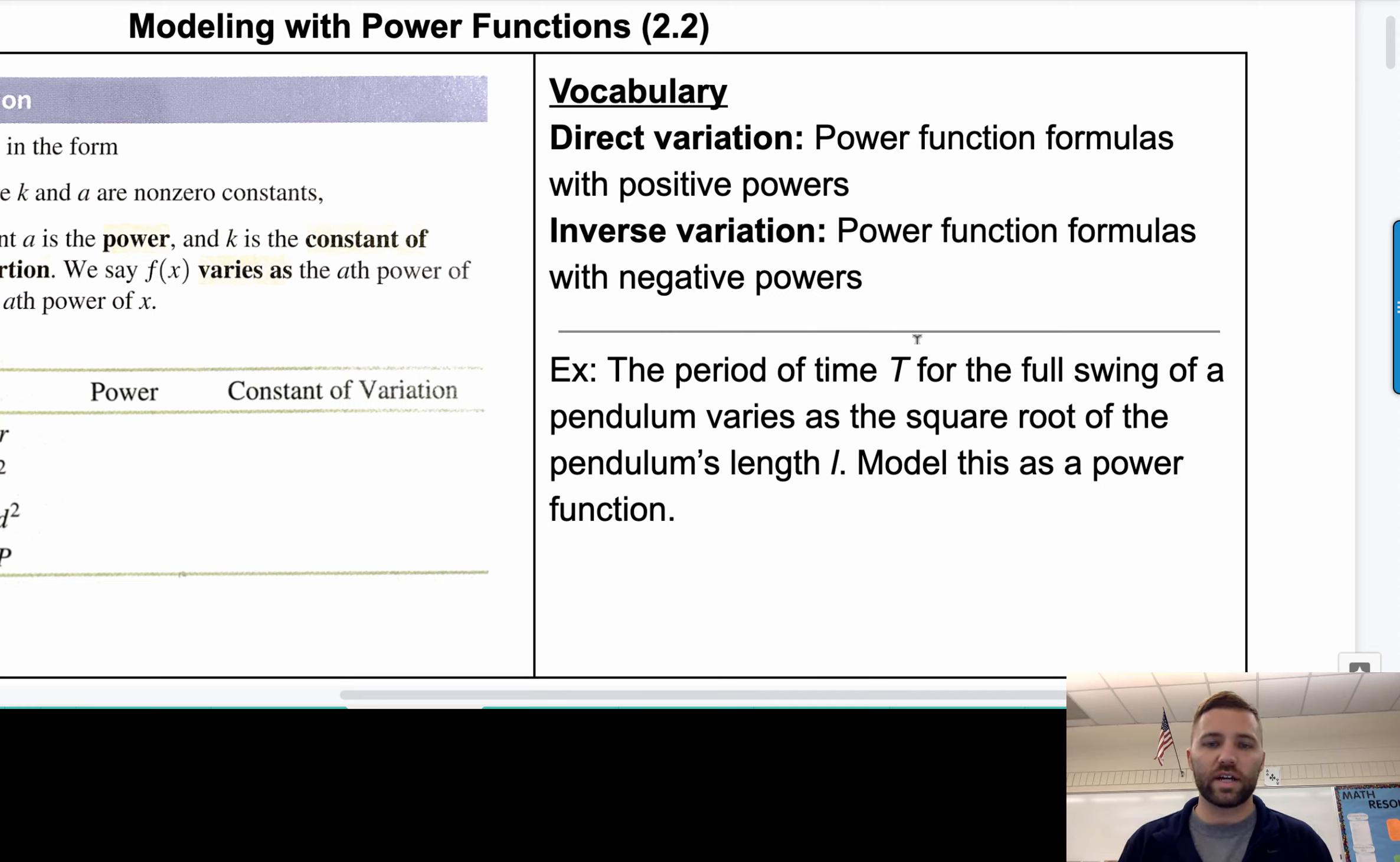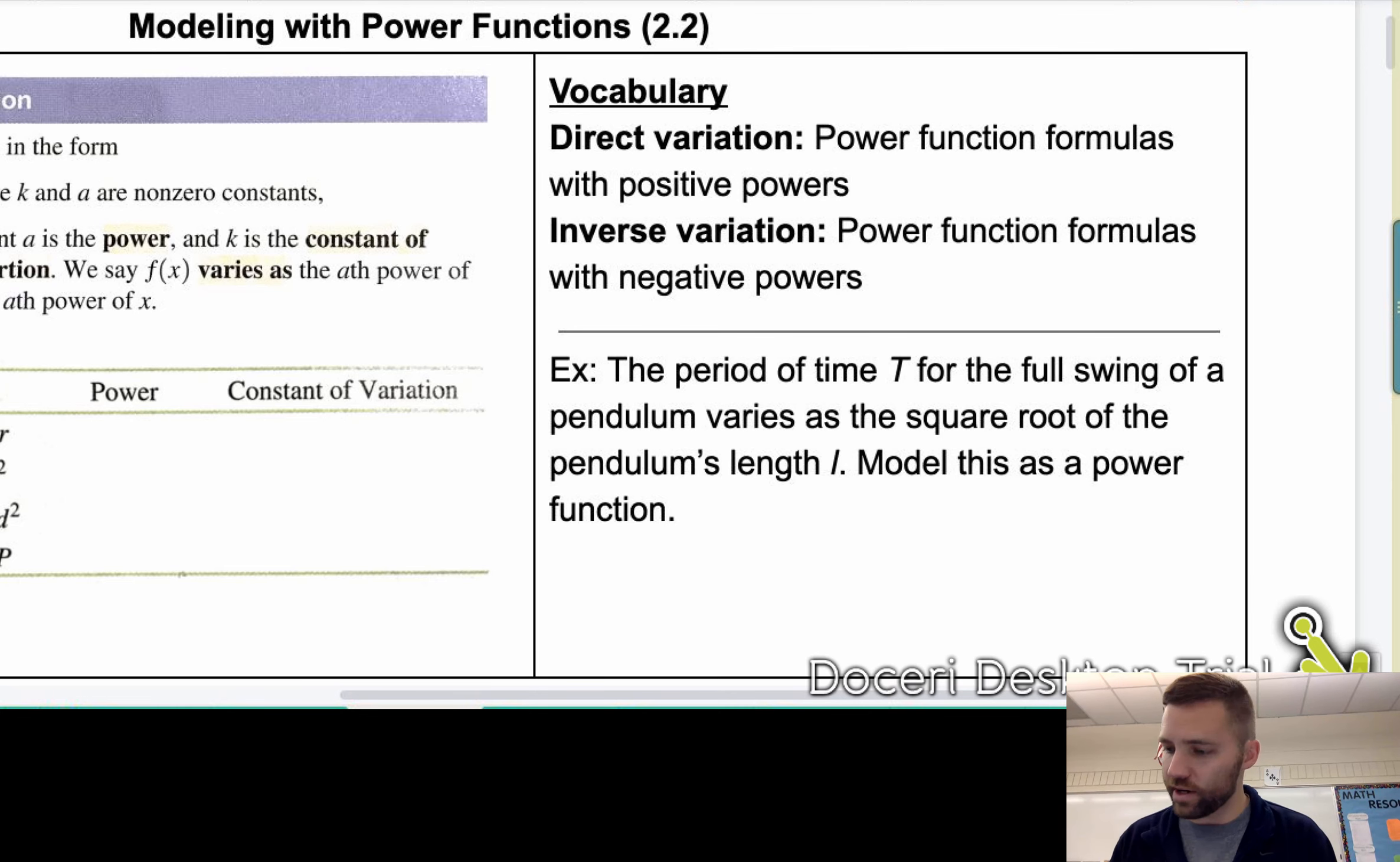Let's do an example here. The period of time t for the full swing of a pendulum varies as the, okay, so there's that phrase that's important here, as the square root of the pendulum's length, L. Model this as a power function. So we have t is equal to, and there's almost too many words here.